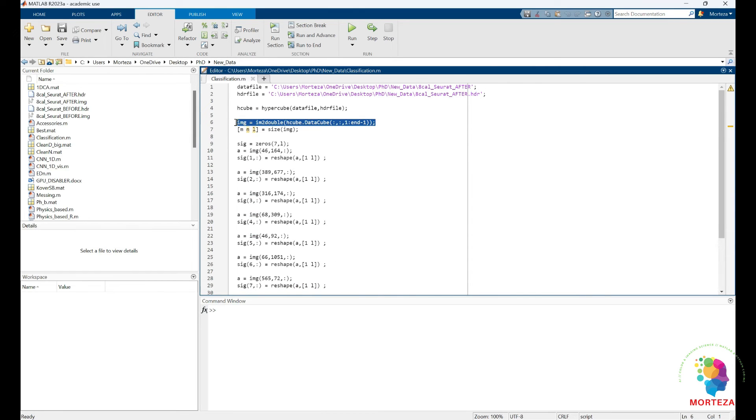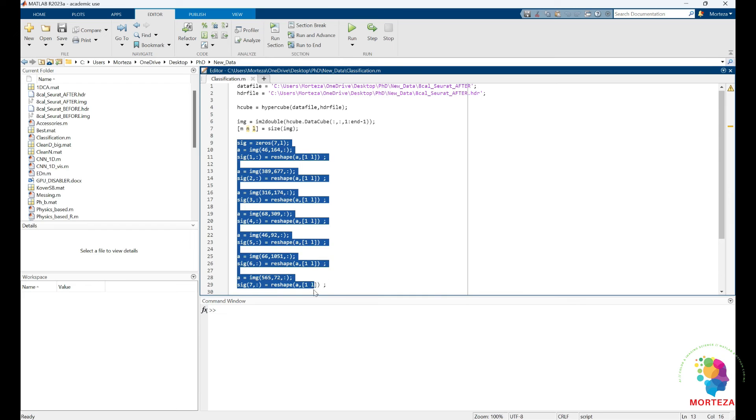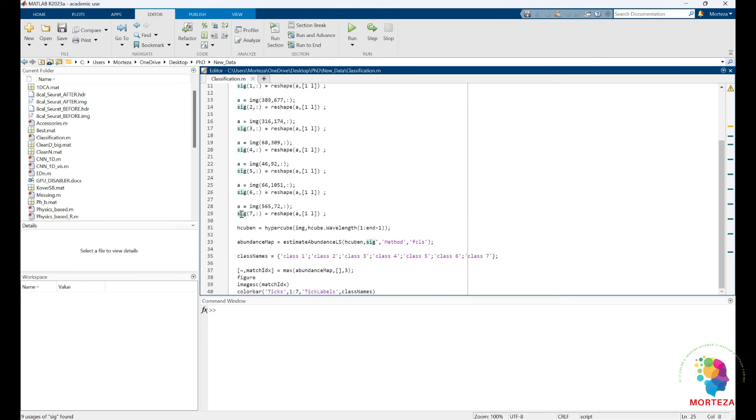I am excluding the last band because I noticed that it is all zero and I don't want to have zero in my data. So you might not have to do this. This might be only specific to me. And then here I am saving the end members. I have already located them and I am going to save them in the variable SIG. And I am going to make a new hypercube here in which the last band is excluded and I have already explained why.